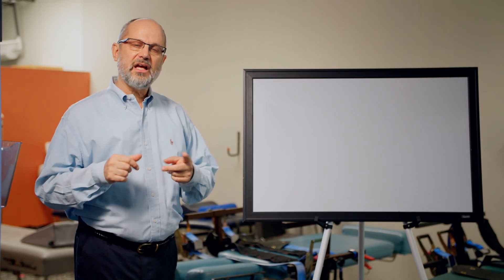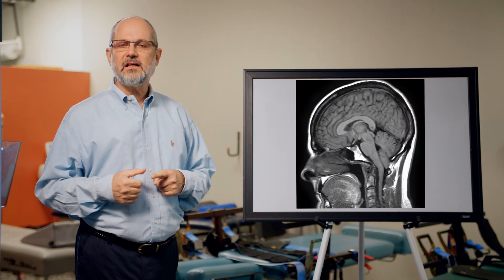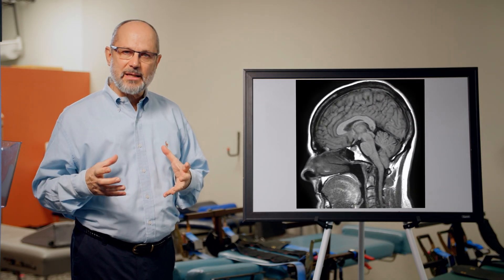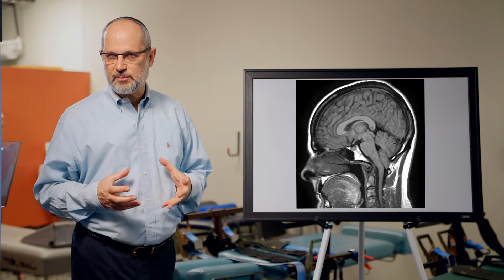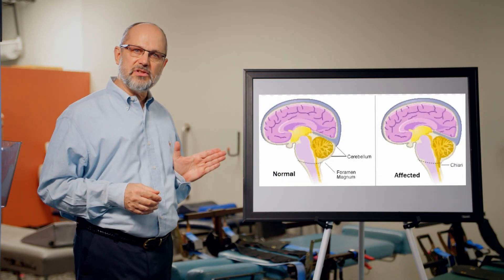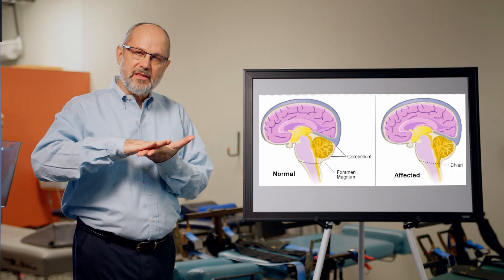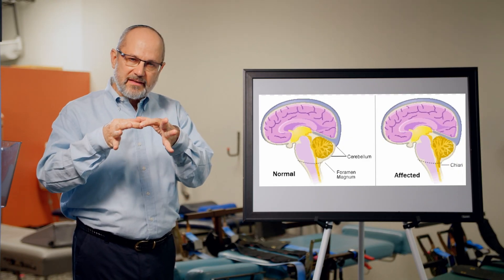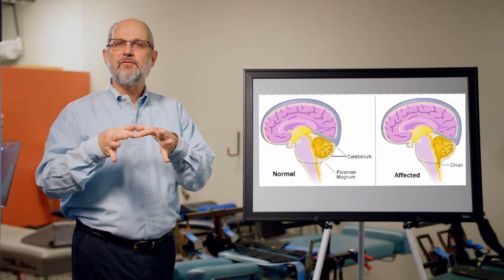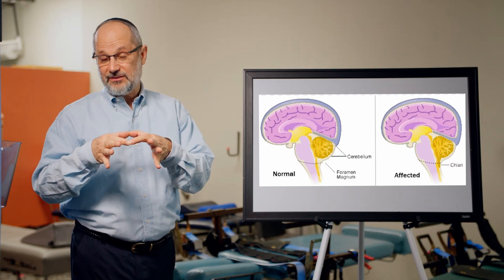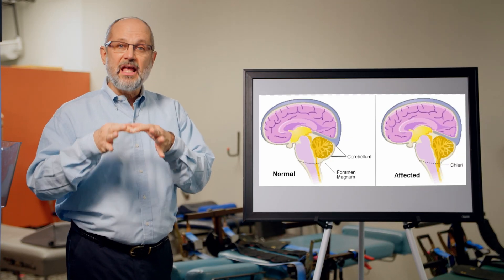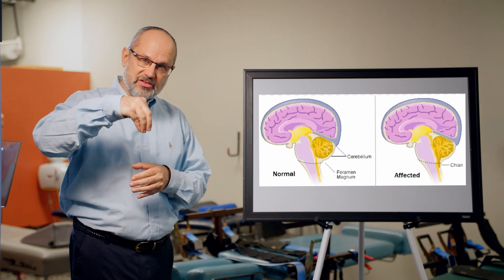Those three things include a Chiari type 1 and Chiari is where the brain stem extends down into the spinal cord. You can see here an image of the brain and the bottom of the brain, called the brain stem, should not extend below the base of the skull. There's a hole at the base of the skull called the foramen magnum. That's Latin for big hole. And we do not want the brain stem to extend below that.